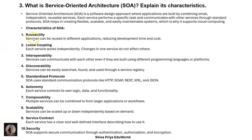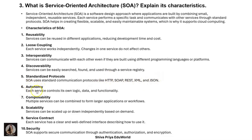The characteristics of SOA are: reusability — services can be reused in different applications, reducing development time and cost; loose coupling — each service works independently, so changes in one service do not affect others; interoperability — services can communicate with each other even if built using different programming languages or platforms; and discoverability — services can be easily searched, found, and used through a service registry. SOA uses standard communication protocols like HTTP, SOAP, REST, XML, and JSON.